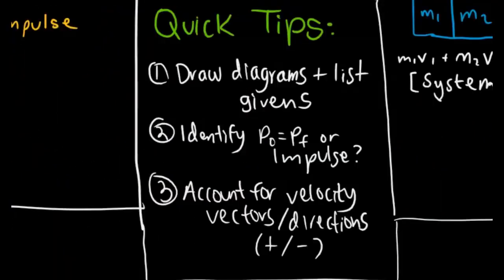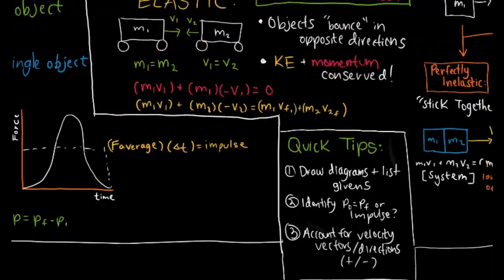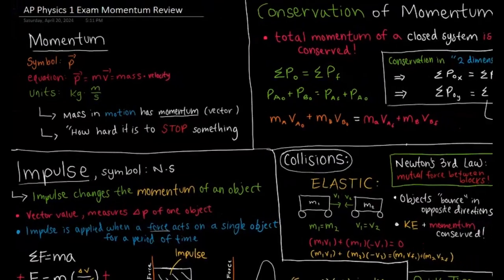Now just some final things, quick tips for momentum problems. Make sure you draw your diagrams and list the givens always for any type of problem. Identify whether there's impulse or conservation of momentum. It'll help you get started with problem solving. You also want to account for velocity vectors and directions. That's super important, especially for collisions. It can absolutely make the difference.